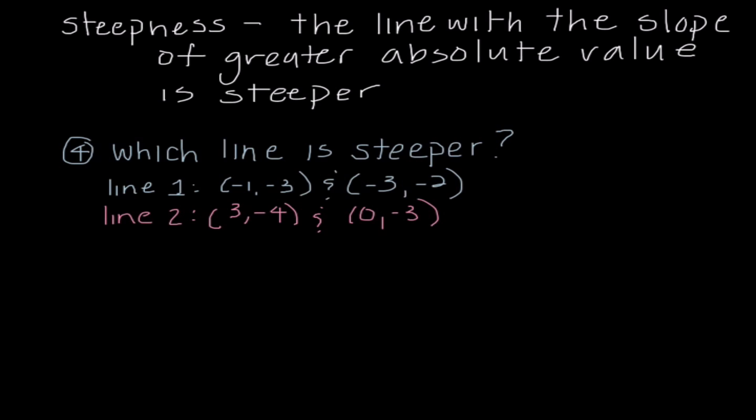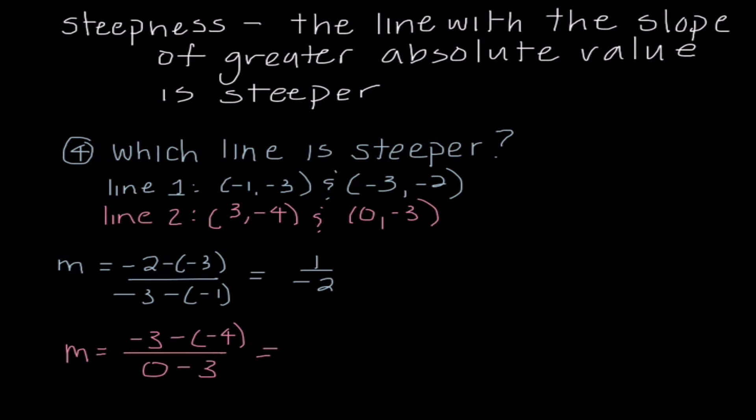So if we look at number four, we need to determine which of these lines is steeper. So we're going to go ahead, and I'm going to find the slope of the first line first. So I'm going to say m equals, and I'm going to do y2 minus y1 over x2 minus x1, and I end up getting 1 over negative 2. Our second slope, I would do negative 3 minus negative 4 over 0 minus 3. So I end up getting negative 1 third as our value.